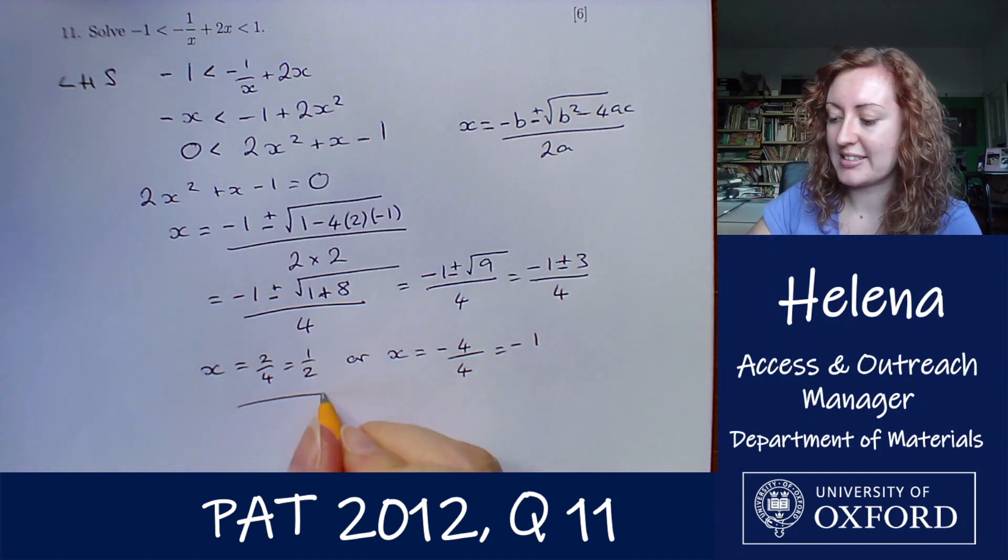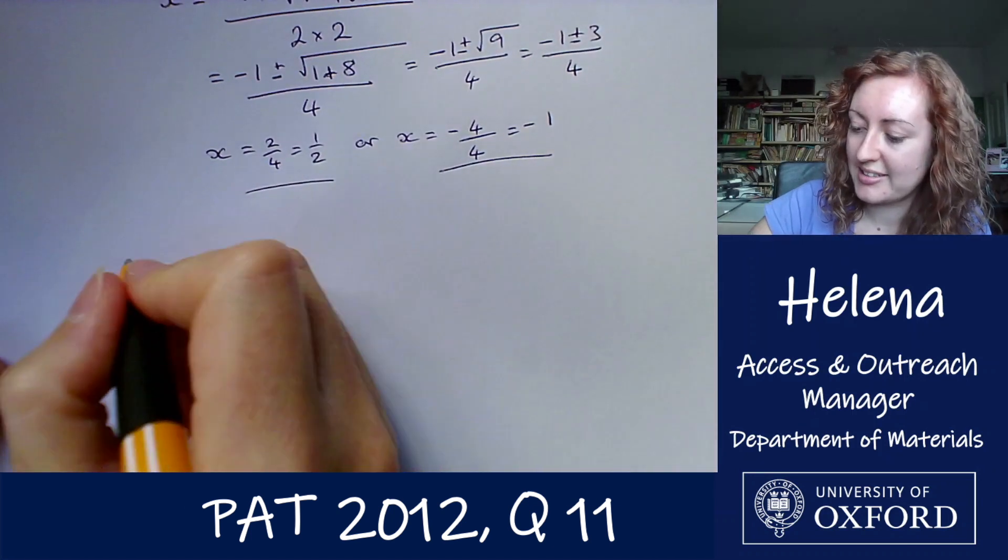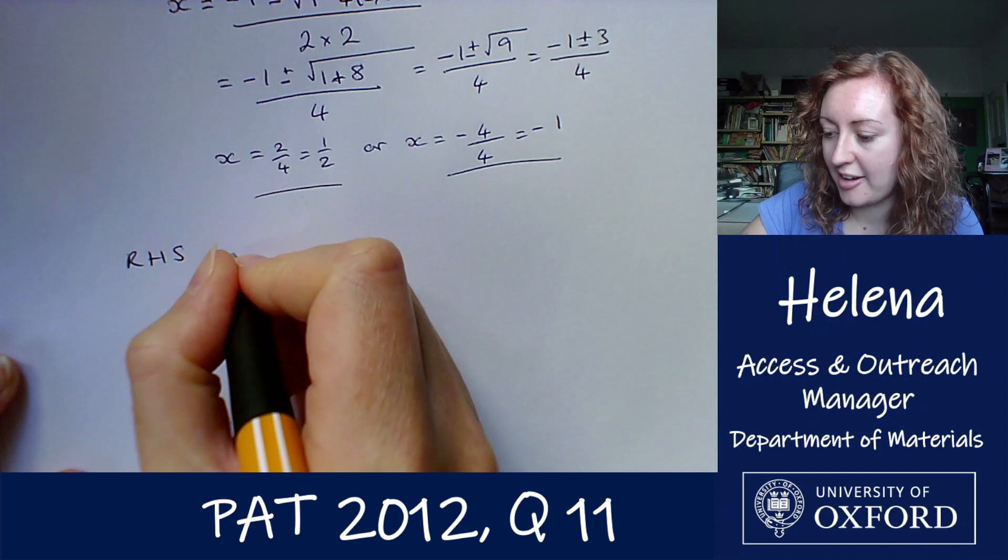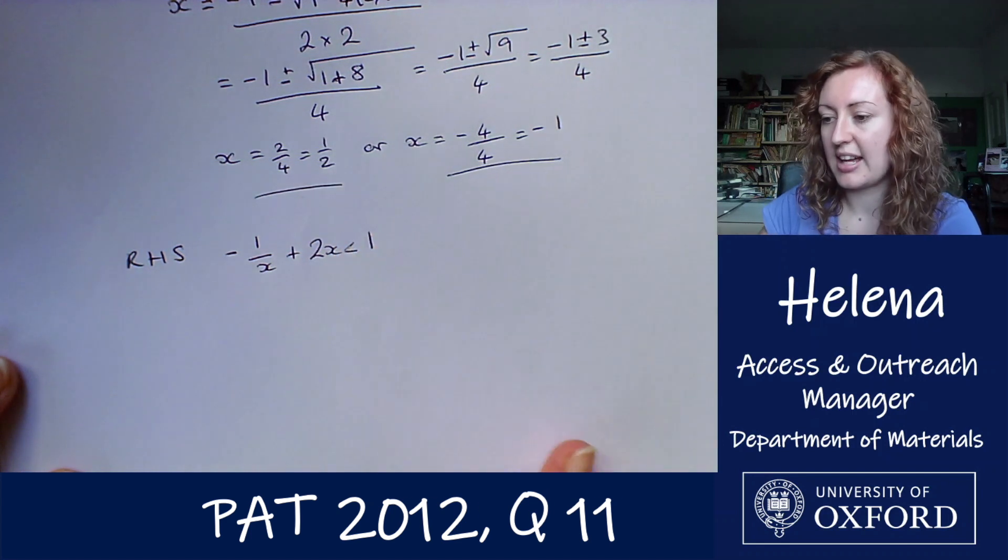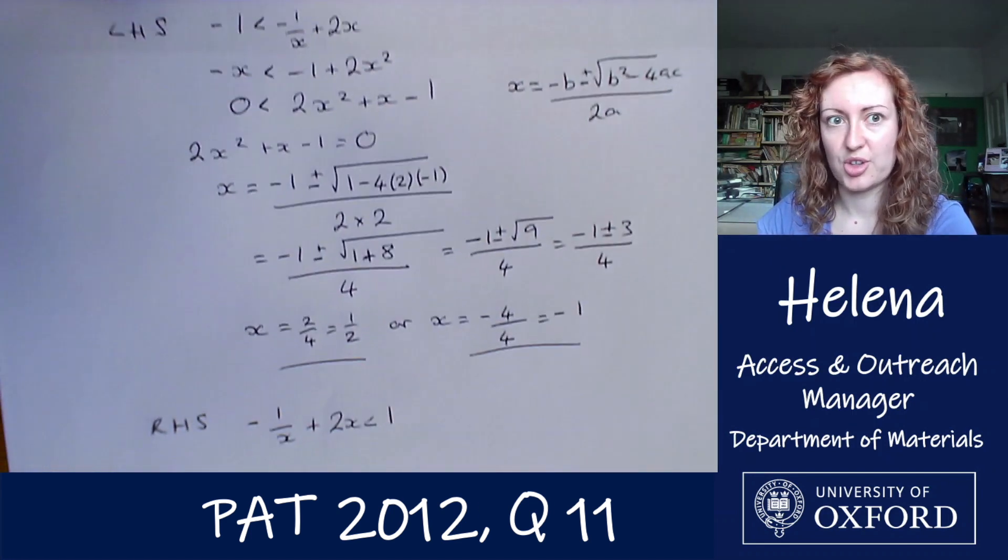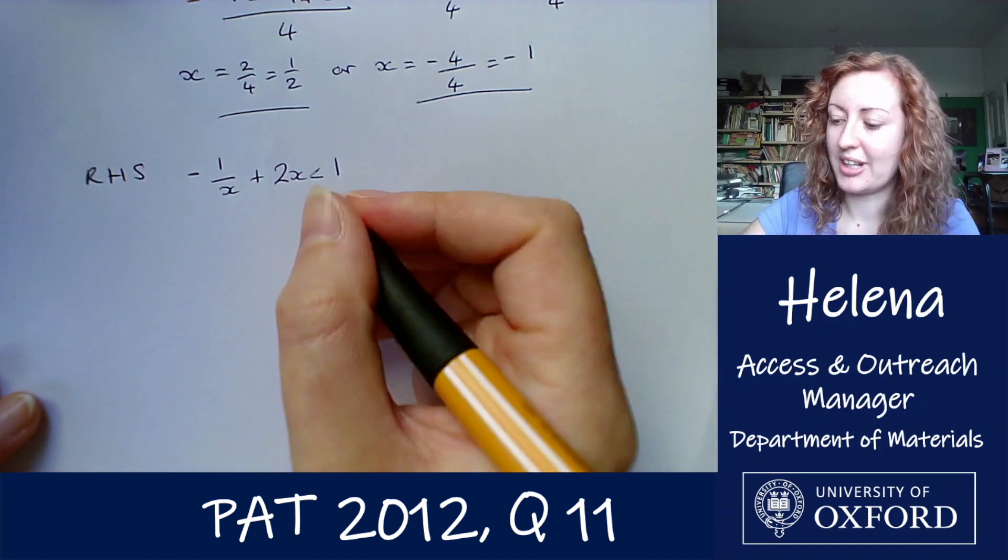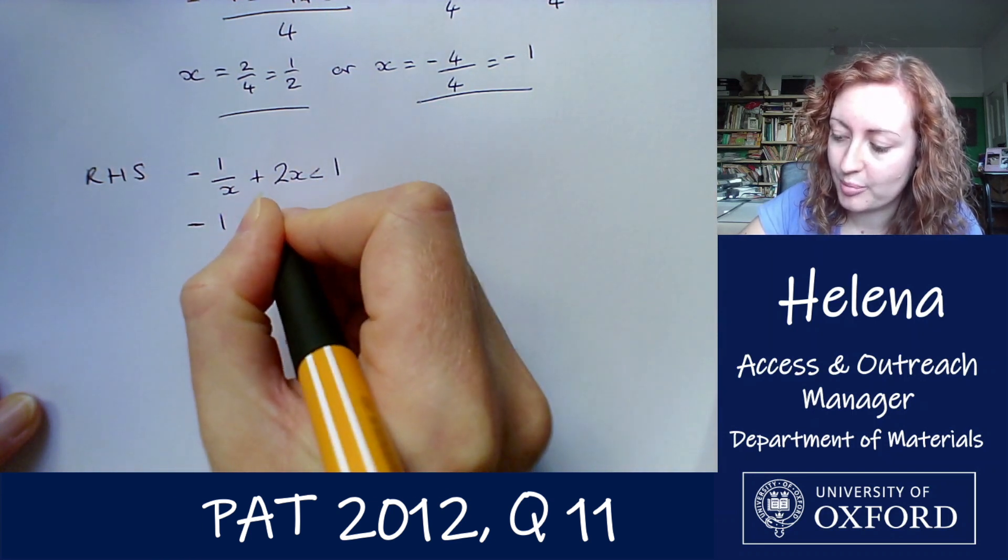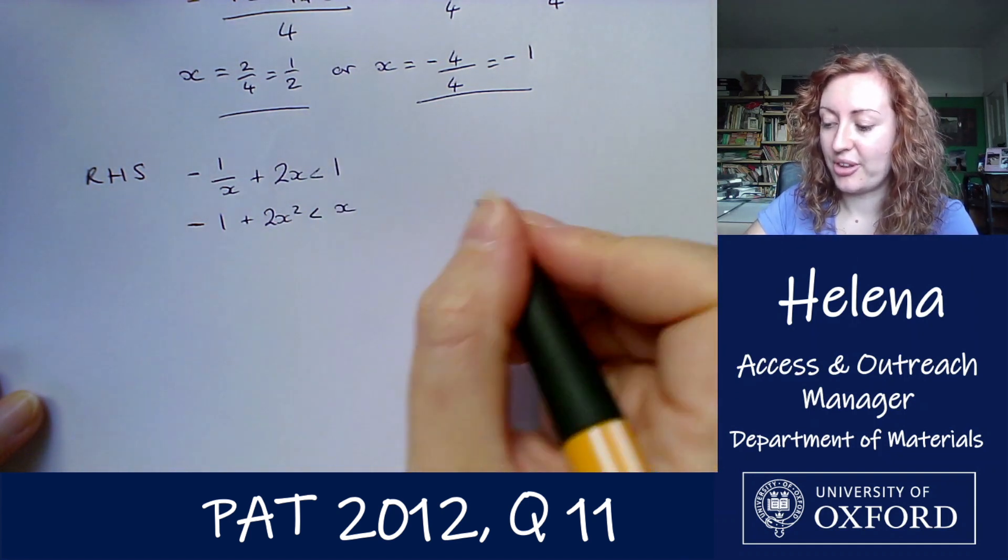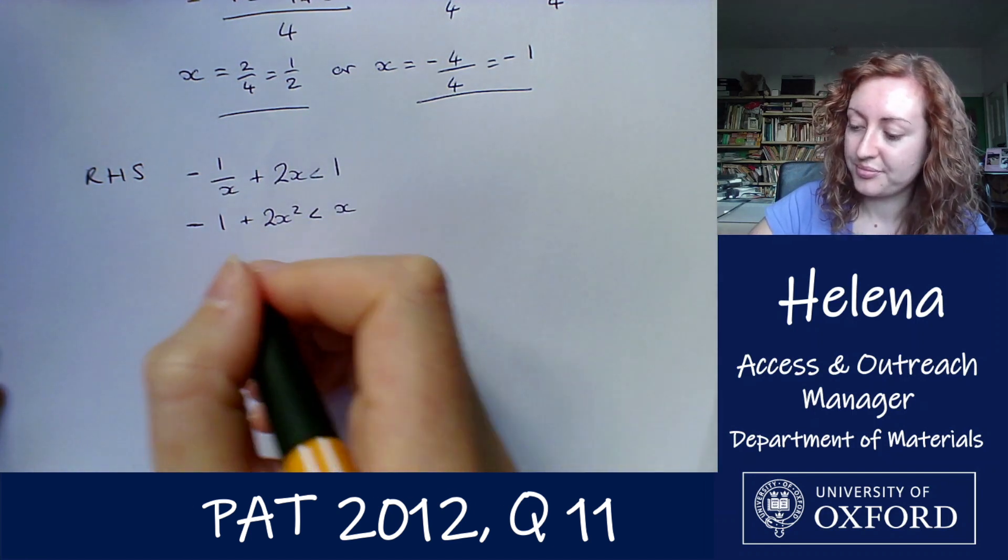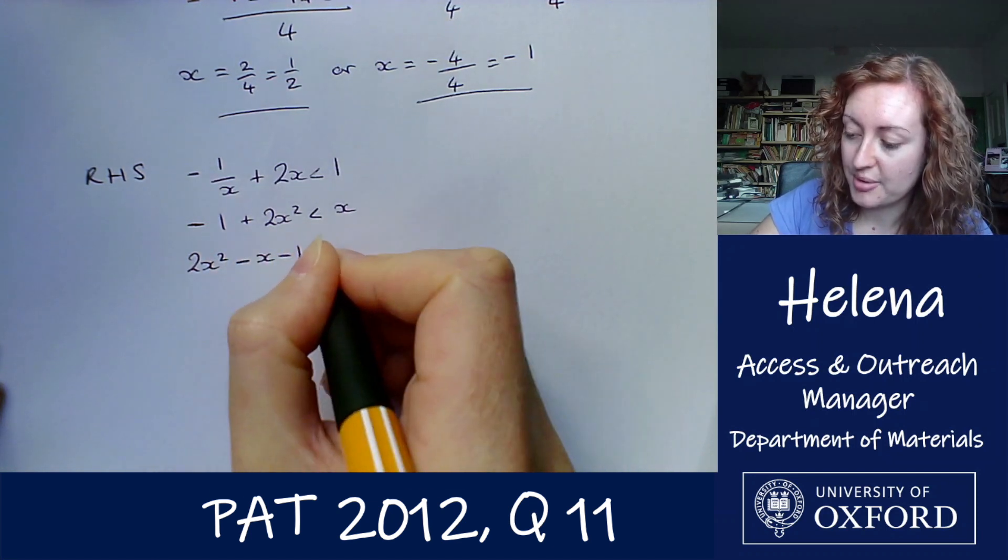So now let's have a look at the right hand side. The right hand side of this inequality we have minus 1 over x plus 2x is less than 1. So again let's get this all into one line, multiply it by x. So we have minus 1 plus 2x squared is less than x. And again let's get this all onto one side.